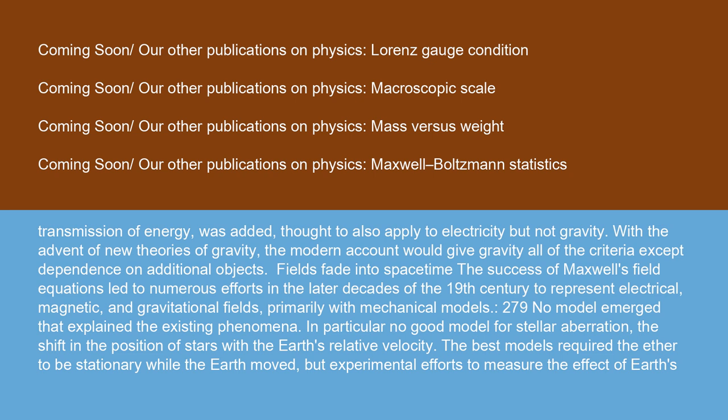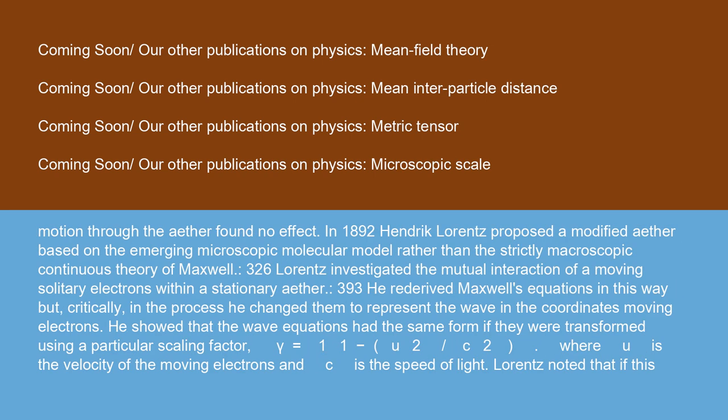Fields fade into space-time: The success of Maxwell's field equations led to numerous efforts in the later decades of the 19th century to represent electrical, magnetic, and gravitational fields, primarily with mechanical models. No model emerged that explained the existing phenomena. In particular, no good model for stellar aberration, the shift in the position of stars with the Earth's relative velocity. The best models required the ether to be stationary while the Earth moved, but experimental efforts to measure the effect of Earth's motion through the ether found no effect.